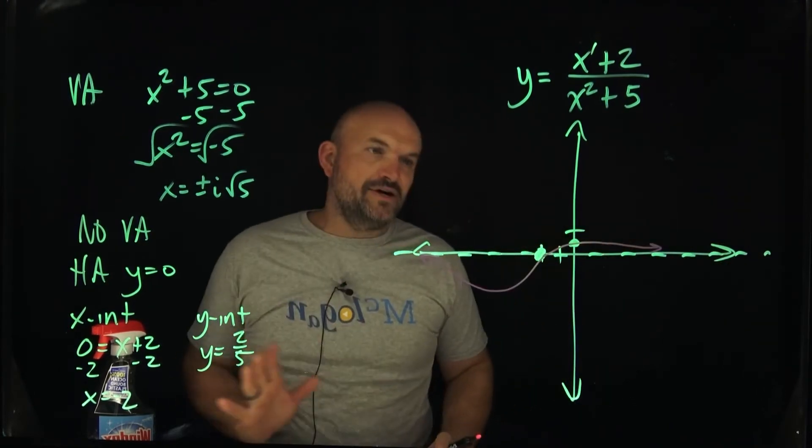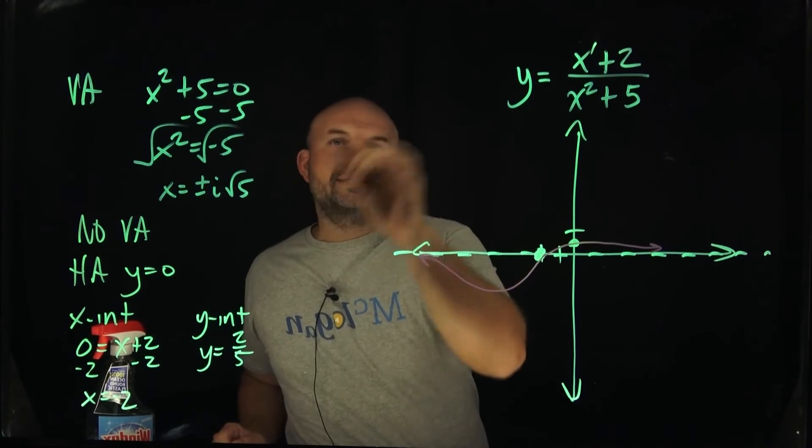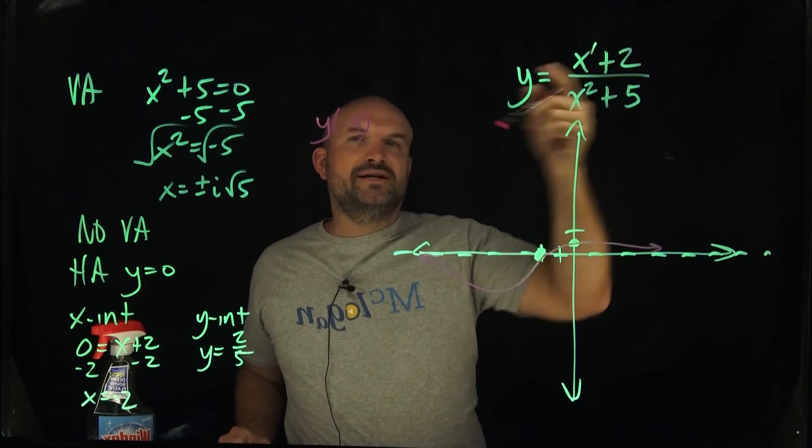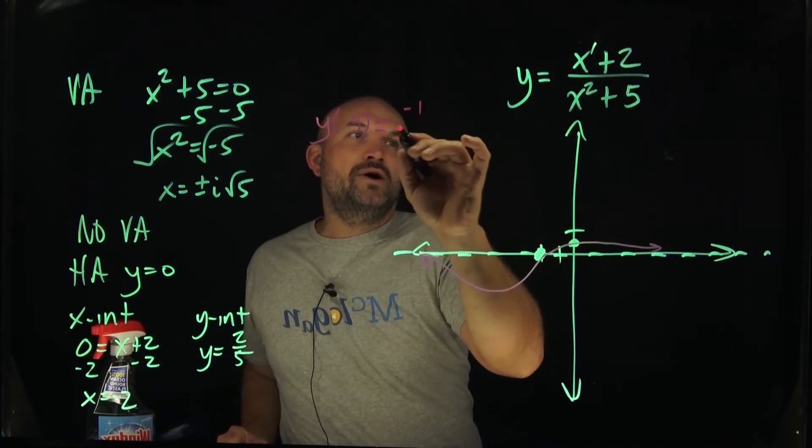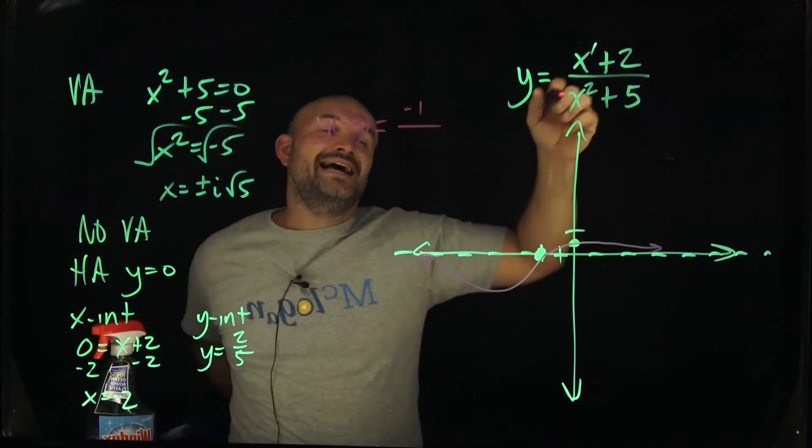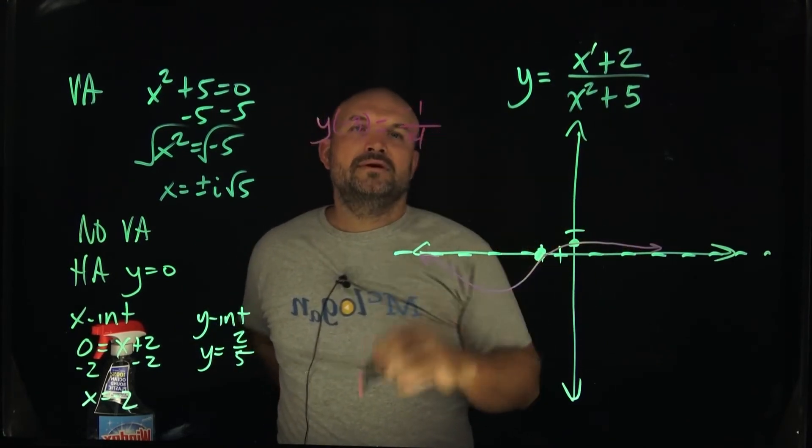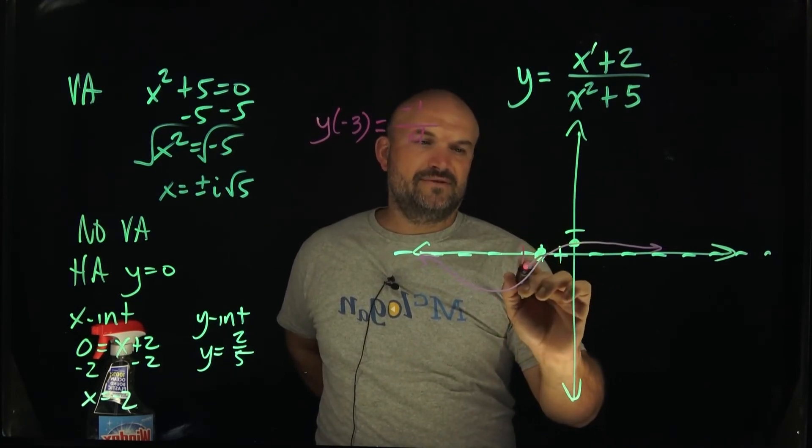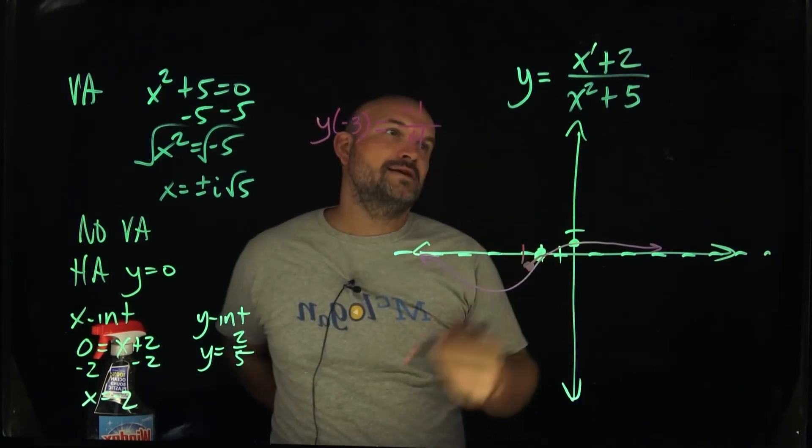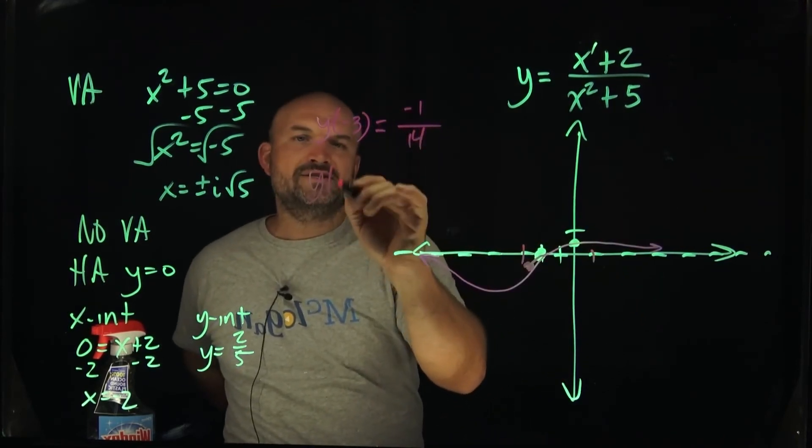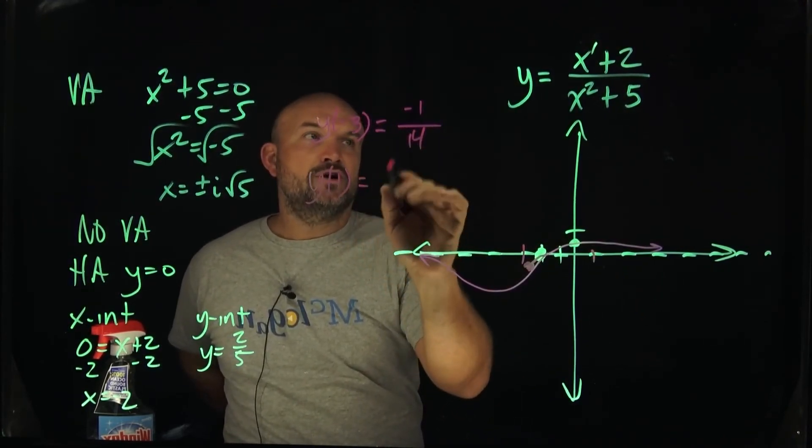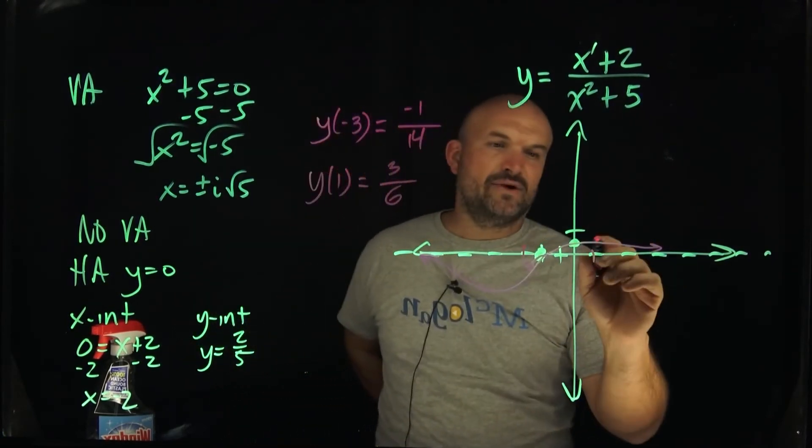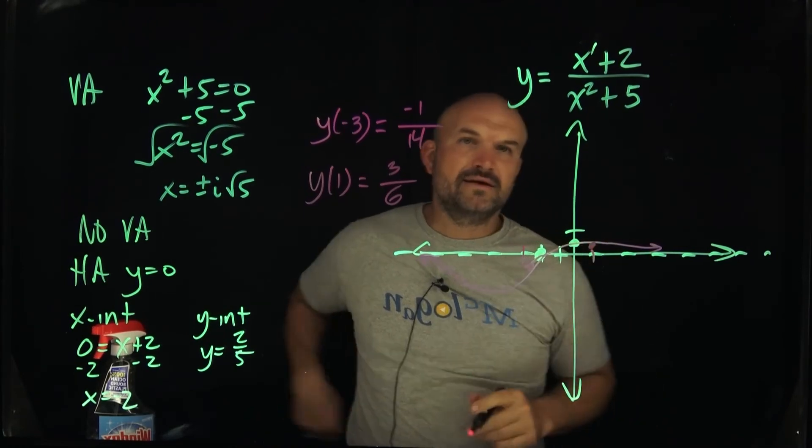Now, just to verify though, let's just double check to make sure it works. So what I'm going to do is let's do some test points. Let's do y of negative three. If I plug in a negative three, negative three plus two is going to be a negative one. Negative three squared is going to be nine plus five is going to be fourteen. So negative one fourteenth looks like that. So yeah, it goes like that. So you can see how that would make sense. And then let's do another point over here. Let's just do one. Why of one? It better be positive. So one plus two is going to be three. One squared plus three is going to be six. Yeah. So that'd be basically one half. And so you can see, like, yeah, that kind of makes some sense.